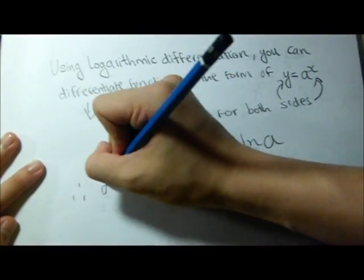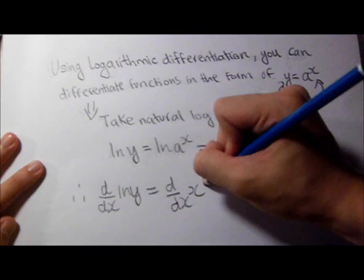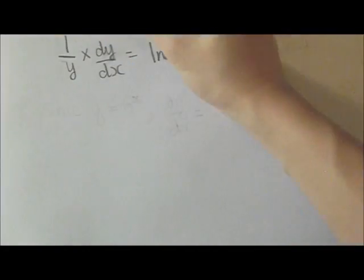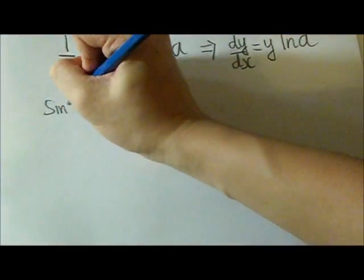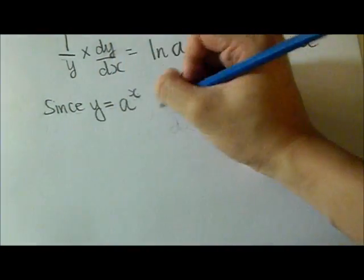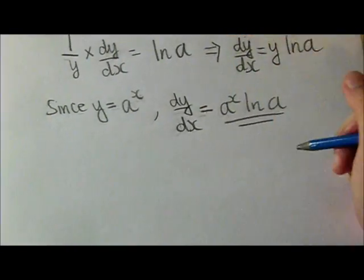Now to differentiate both sides, we write it as d/dx ln y equals d/dx x ln a. And next step, on the left hand side we use implicit differentiation, on the right hand side we just differentiate it as normal. So dy/dx equals y ln a. Since y equals a to the x, dy/dx equals a to the x ln a.